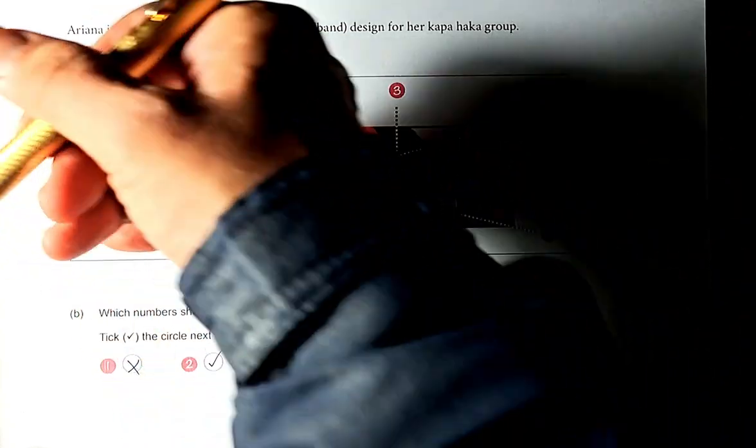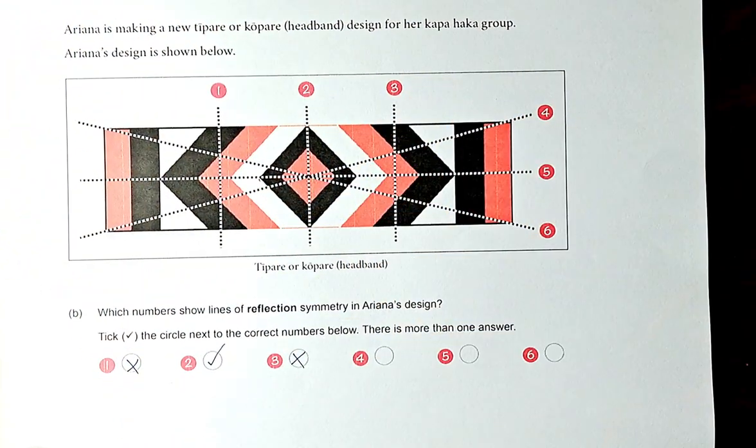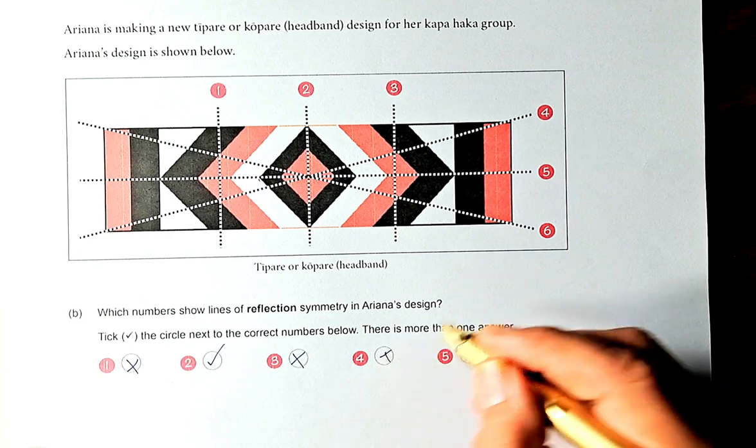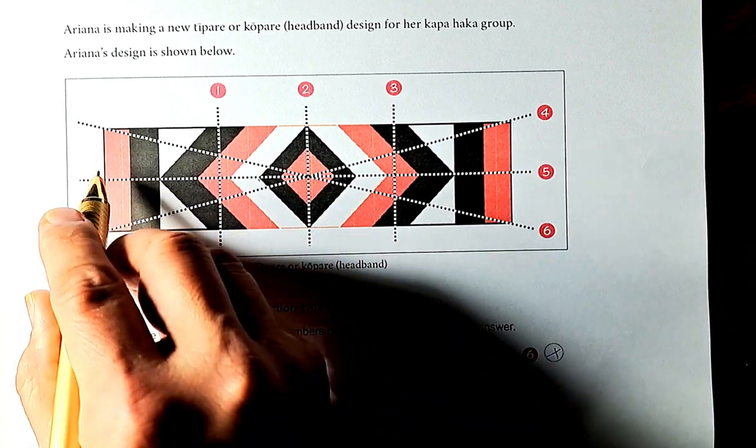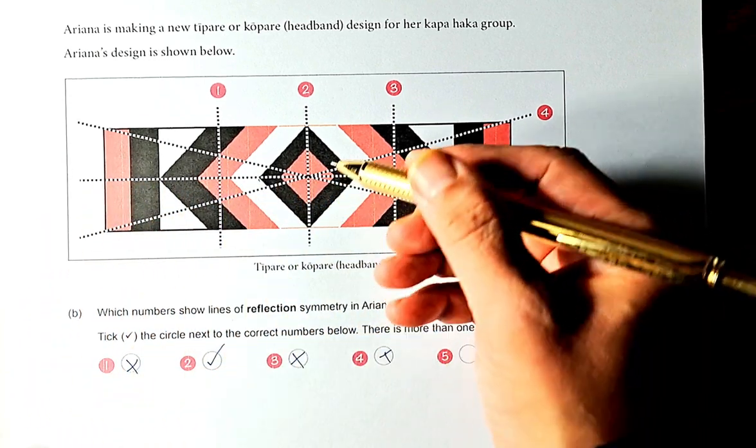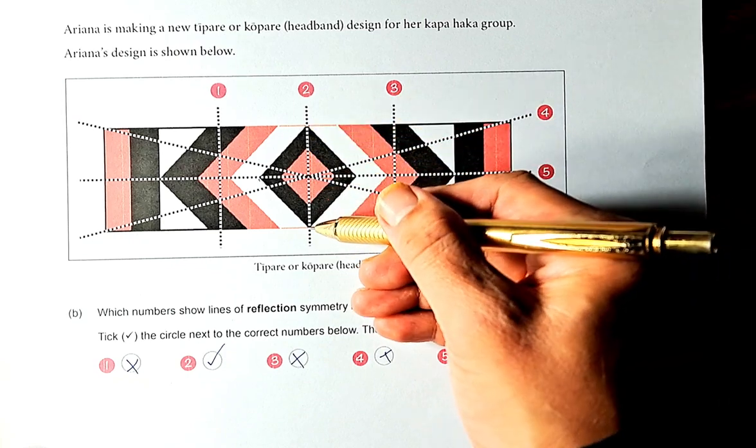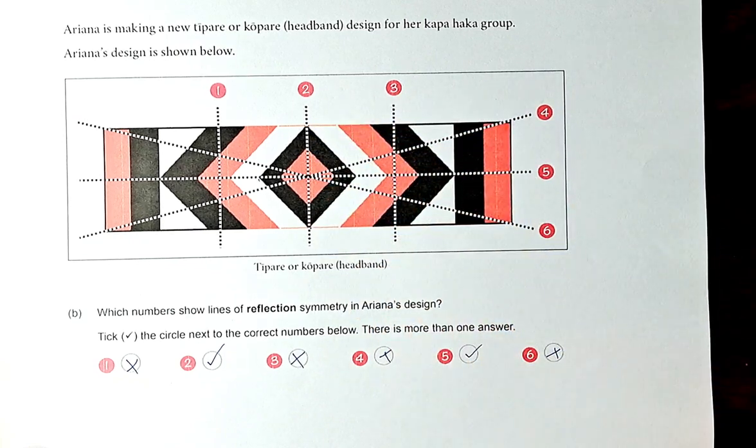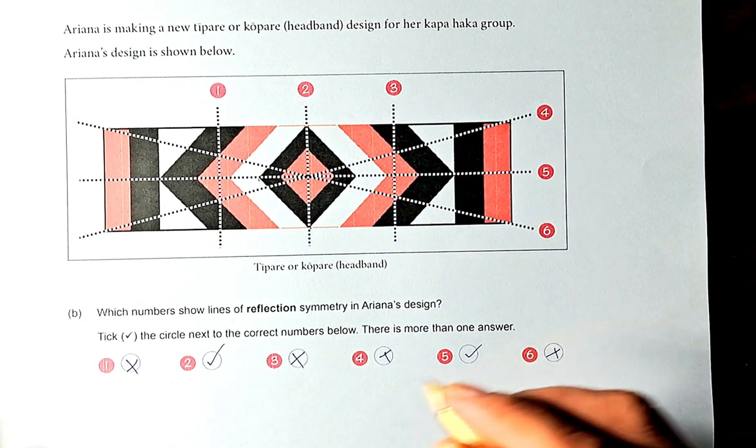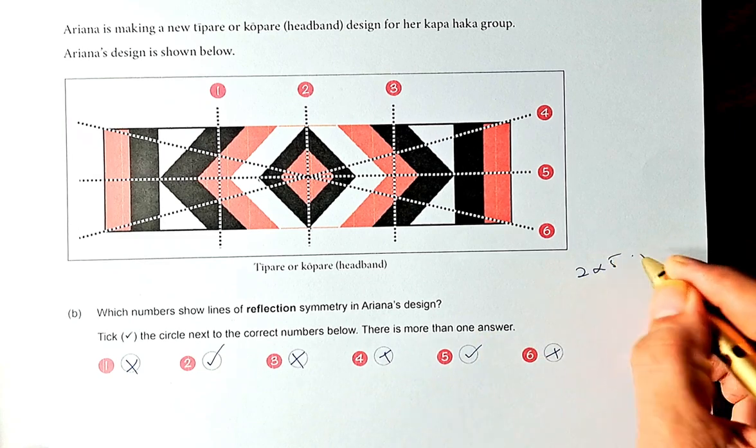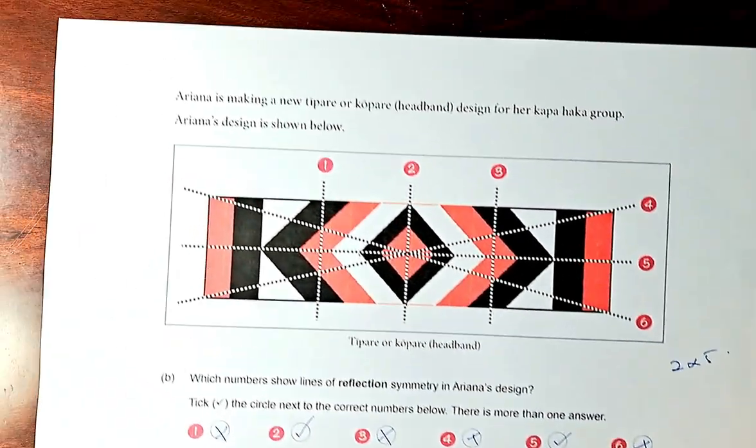If you reflect on 4, whether the image here is the same as that, it is not. So 4 is not. 6 is also not. But 5 is. That is the line of reflection. If you get a point there, the reflection is there. So 5 is the answer. The answer for this question is going to be 2 and 5. Now we'll look at question 2C.